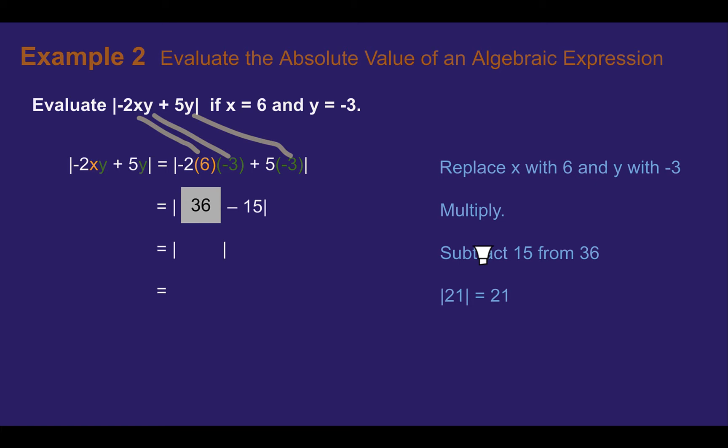Now we can move on to subtraction. So 36 minus 15 is 21. Now we have only our value inside the absolute value. We can take the absolute value. So the absolute value is just the positive version of that number. It's already positive, so we're going to keep it positive. 21 is our answer.